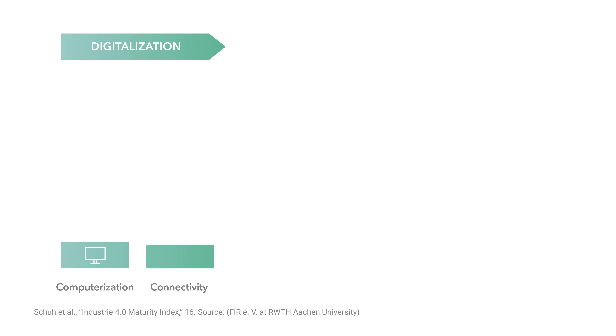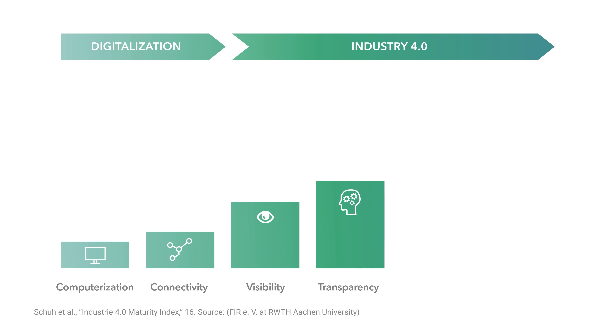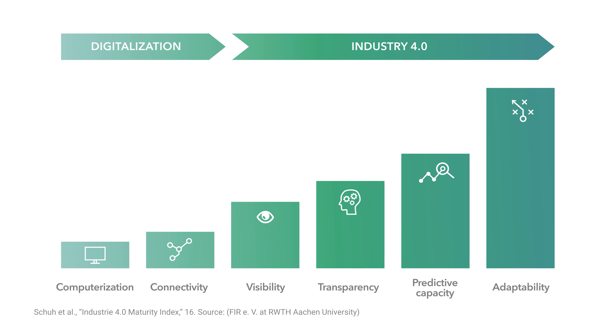Germany's Academy of Science and Engineering has produced an Industry 4.0 maturity index, which describes six stages of digital transformation: computerization, connectivity, visibility, transparency, predictive capacity, and adaptability.